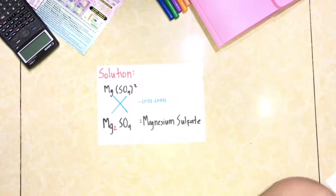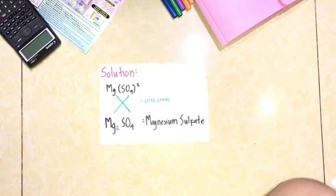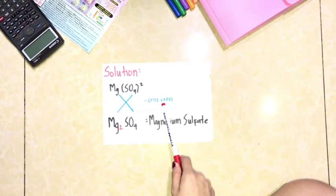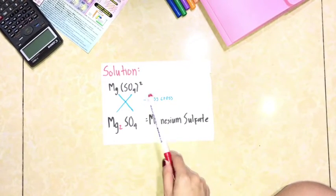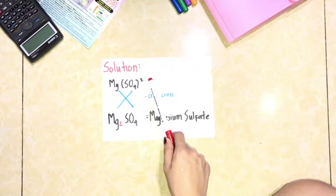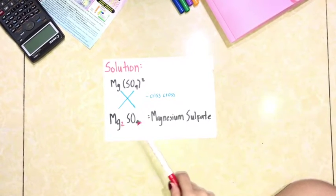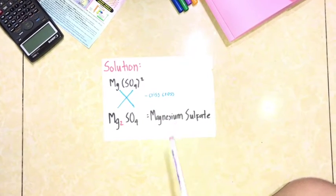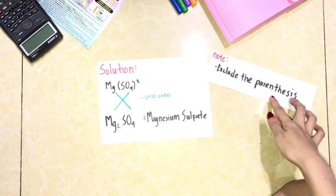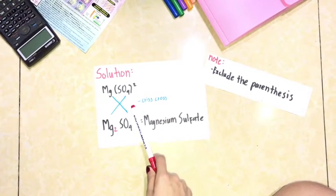Here is the solution. When doing the criss-cross, the superscript of sulfate must become the subscript of magnesium, which gives us magnesium sulfate. Take note: you must exclude the parenthesis.